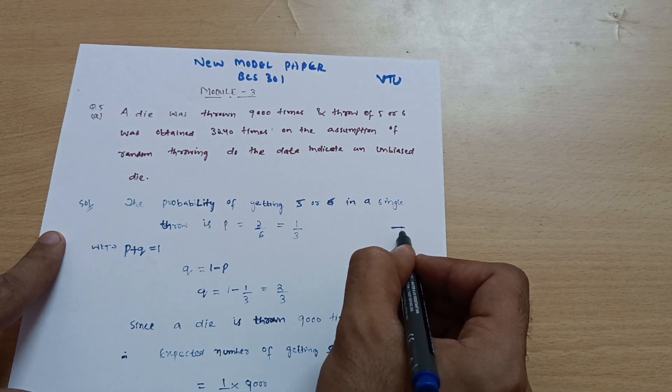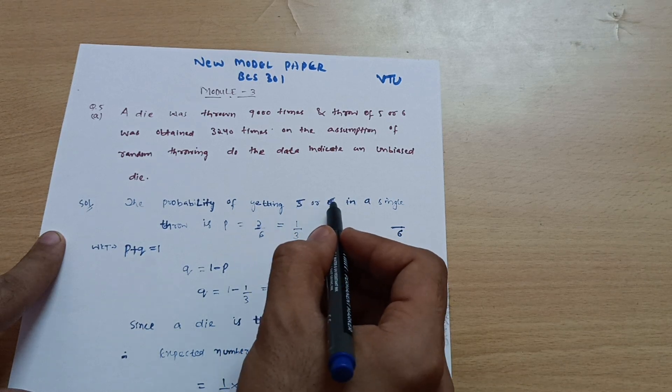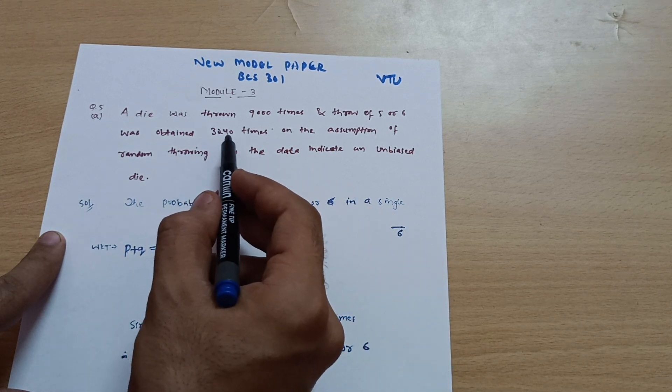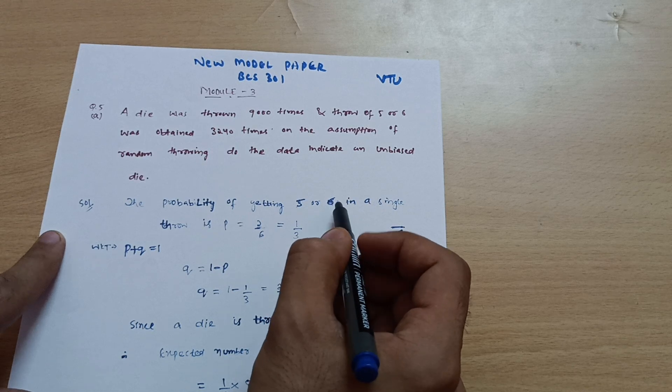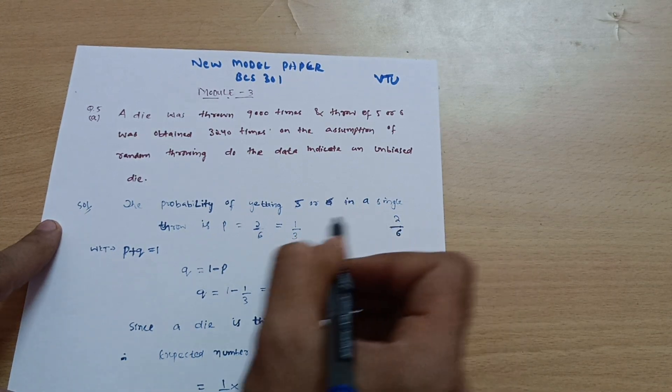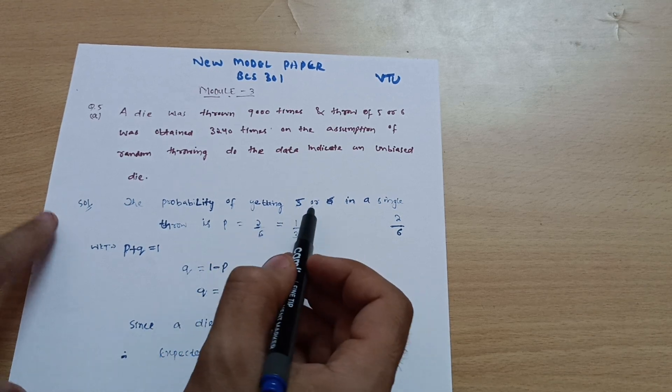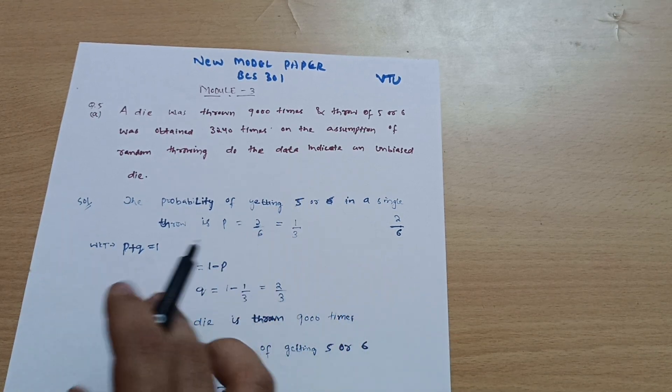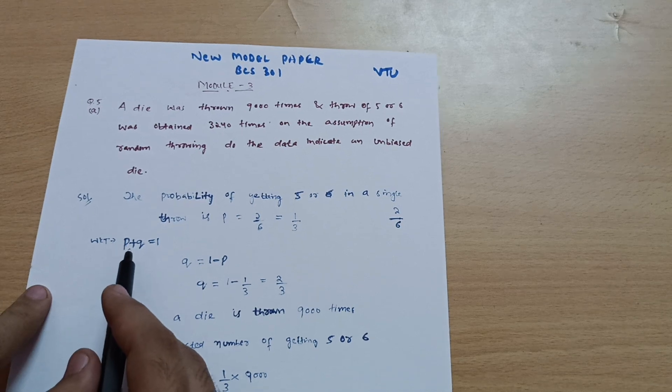Why two by six? Because there are six faces in a die. Out of six, these two faces five or six are coming three thousand two hundred forty times. So if I take the probability, these are the two faces, two by six is one by three.